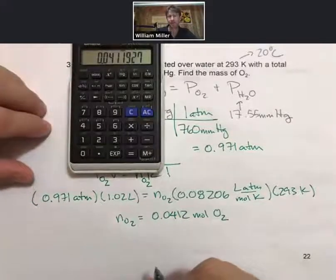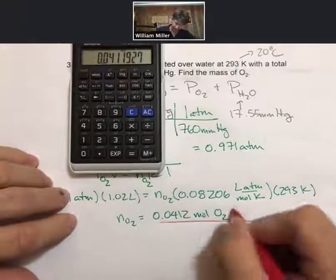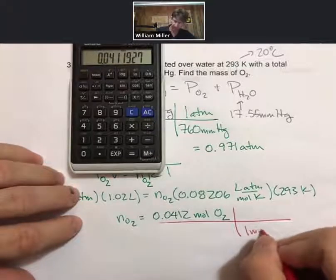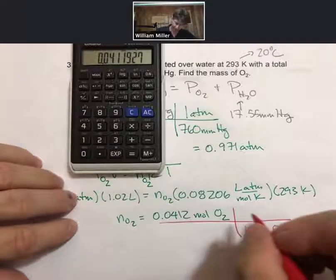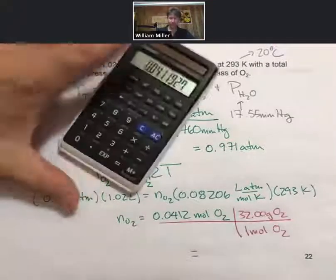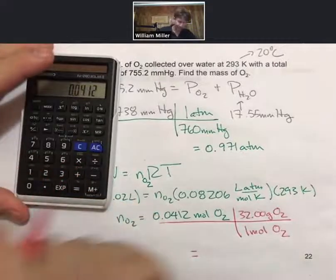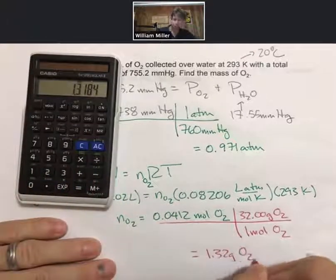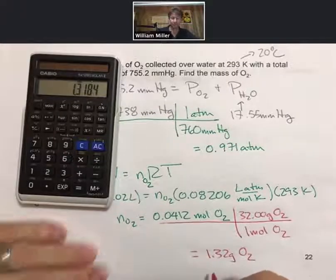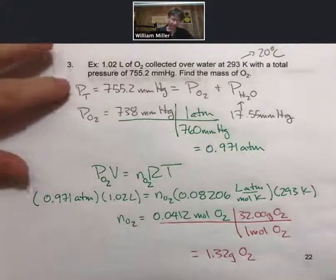From there, we need grams of oxygen. One mole of oxygen equals 32.00 grams. Times 32, that's 1.32 grams of O2. That's a very typical problem using partial pressures, vapor pressures, and total pressures.